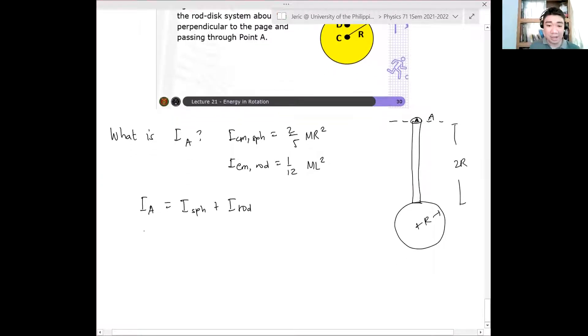But we know that I sphere, the moment of inertia about point A, is the sum of what? We will use parallel axis theorem for I sphere and I rod. So this is simply ICM sphere plus the mass of the sphere times the distance of the sphere from the axis of rotation.